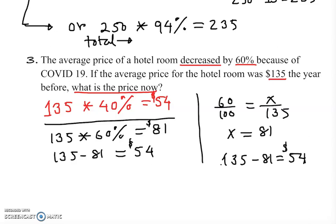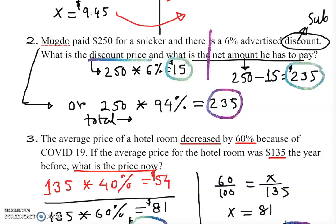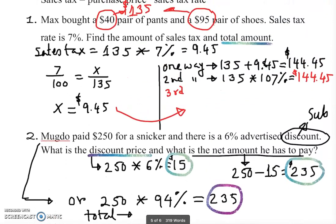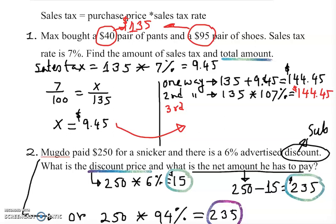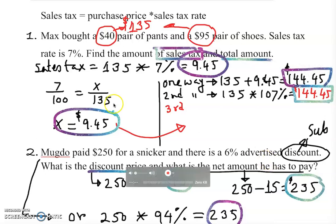So no matter which way you use, you get the same answer. For the discount example, the net amount is $235 either way. For the discount amount alone, you just multiply. Going back to the first example, the sales tax is $9.45, and the total amount is $144.45. All three examples follow the same structure — you just need to know whether to add or subtract. Thank you very much for watching.